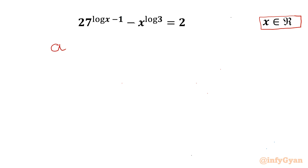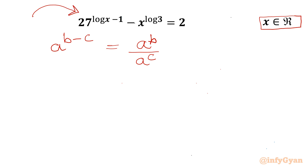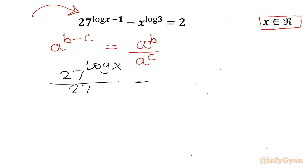The equation is 27 to the power (log x minus 1) minus x raised to the power log 3, equal to 2. We begin by writing a powerful exponential property: a^(b minus c) equals a^b divided by a^c. Let's apply this property to our LHS: 27^(log x) divided by 27, minus x^(log 3), equals 2.